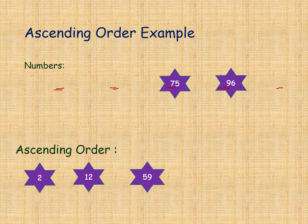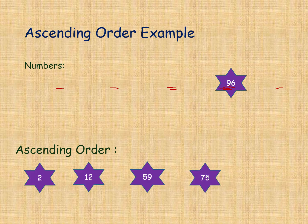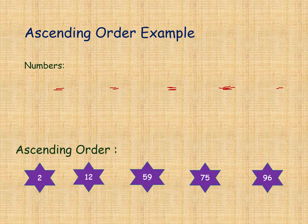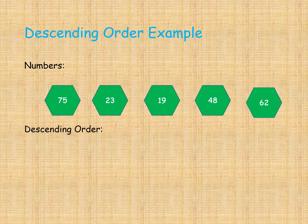Next, in the two remaining numbers 75 and 96, we compare 7 and 9. Seven is the smaller, so 75 will come next, and the last remaining number 96 comes last. So we are arranging ascending order — small to large.